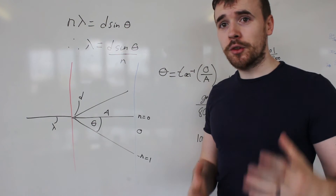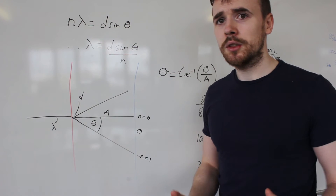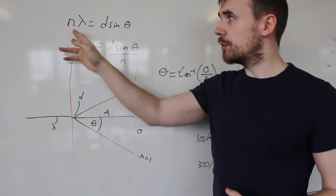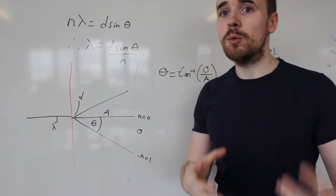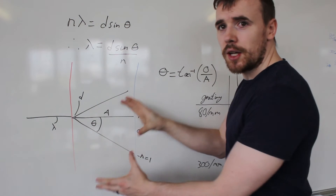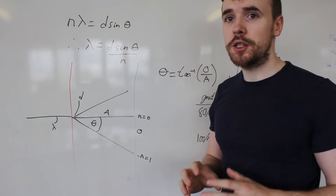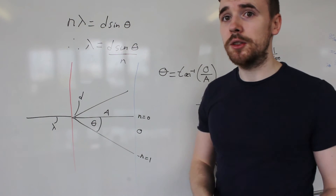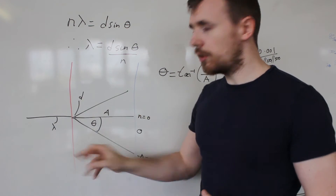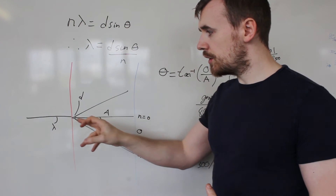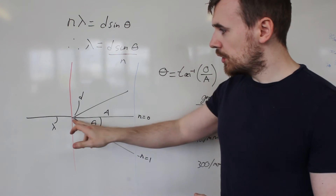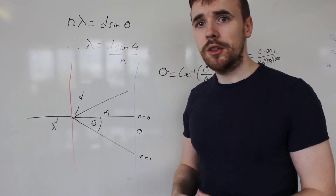Now we're ready to work through the analysis of our results. The equation we're basing it on is the equation which describes the diffraction of light through a grating: n lambda equals d sin theta. We're ultimately after the wavelength of the light, so I've rearranged that to lambda equals d sin theta over n. There's a little diagram of the setup which helps identify where each variable is represented within our experiment. We've got the laser light incident upon the diffraction grating, which causes it to diffract, interfere, and form our pattern on the screen. The d is the separation between the slits in the diffraction grating.